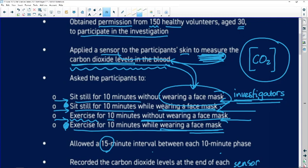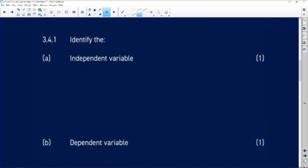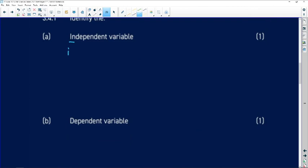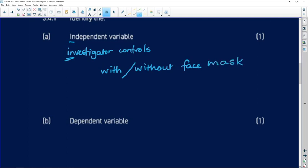This variable, carbon dioxide levels in the blood, the investigator didn't know about. The investigator had to measure those levels. So the independent variable is what the investigator controls. Our independent variable is going to be with or without the face mask. You could say that in different ways: presence or absence of a face mask.